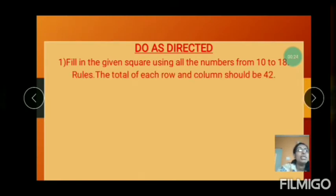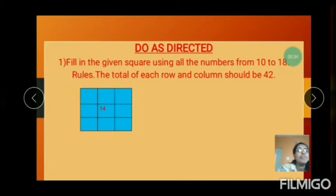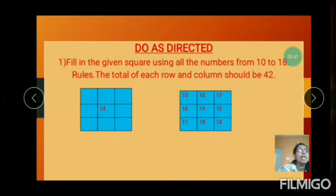You see all the numbers from 10 to 18. The total of each row and column should be 42. One number is given: 14. All the numbers are from 10 to 18.